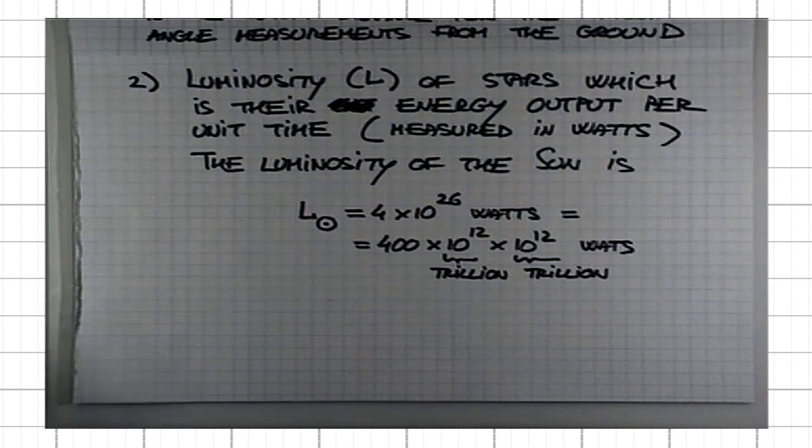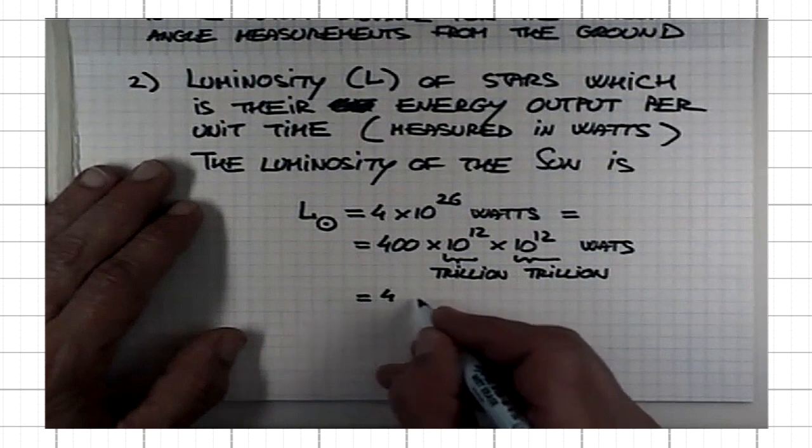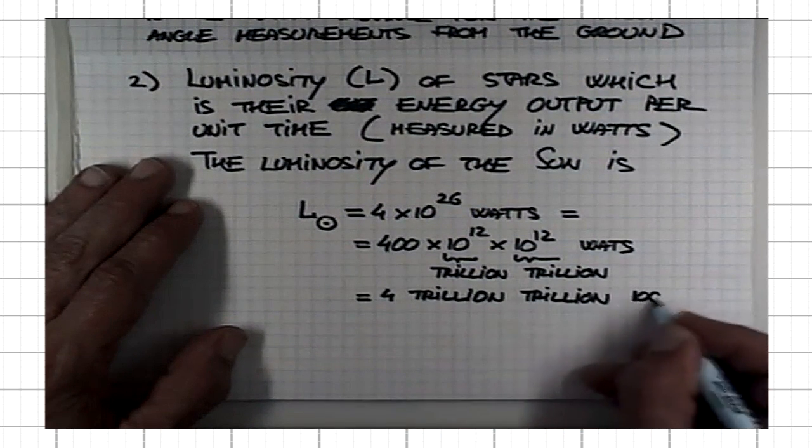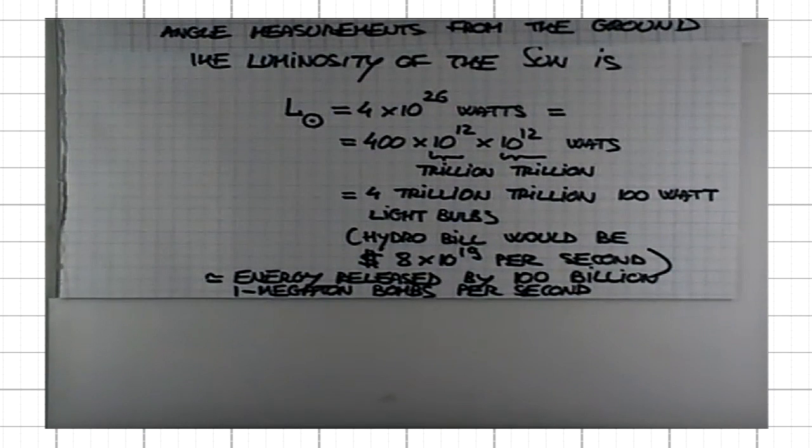This is the same energy output as from 4 trillion trillion 100 watt light bulbs. It's an enormous amount of energy emitted by the Sun every second.